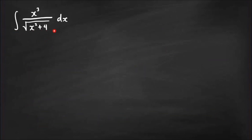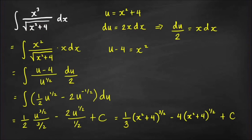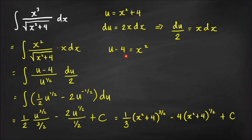Next integral: ∫x³/√(x²+4) dx. The obvious choice for u is x²+4. Then du = 2x dx, so x dx = du/2. We rewrite the integral grouping x²·(x dx), since x dx produces du. The remaining factor x² can be written in terms of u from the substitution: x² = u − 4.